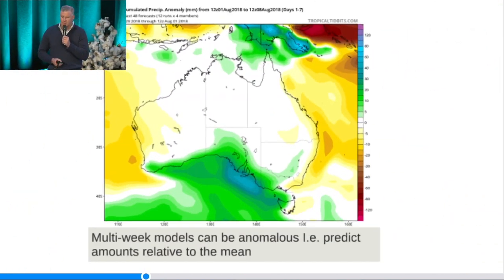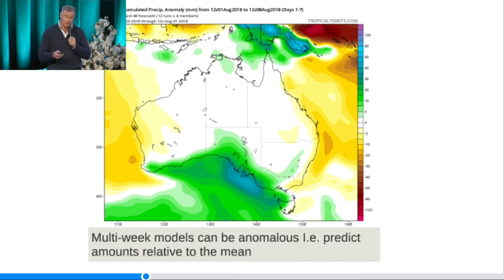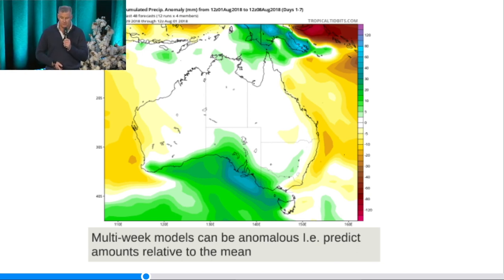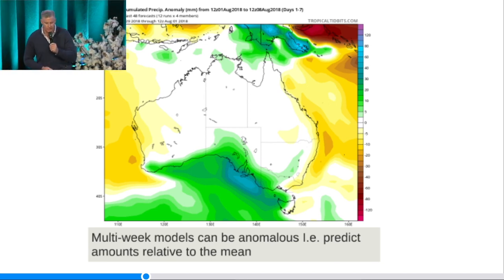Then we've got our multi-week models. There's an example of a one-week anomaly forecast — relative to the mean, for one week. On that particular CFS US site, it will go out six weeks. These are probably, in my opinion, the most useful models to look at, but unfortunately the least accurate. There's lots of research going on in that area at the moment.